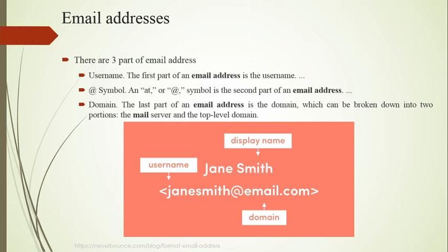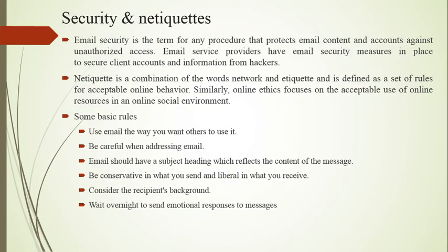An email address has three parts: the username, the '@' symbol, and the domain. For example, 'john.smith@email.com' — here 'john.smith' is the username, '@' is the second part, and 'email.com' (or gmail.com, yahoo.com, etc.) is the domain. The domain can be broken down into two portions: the mail server and the top-level domain.